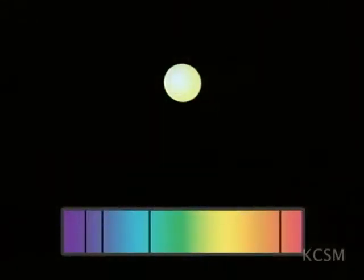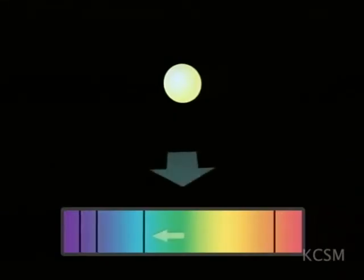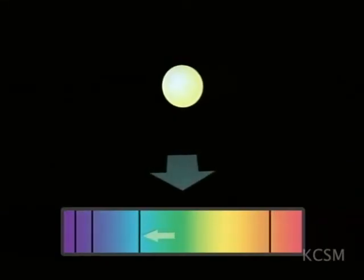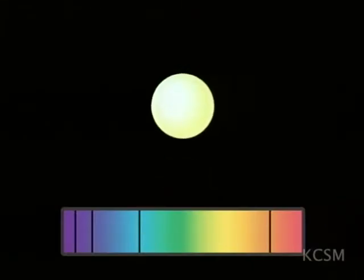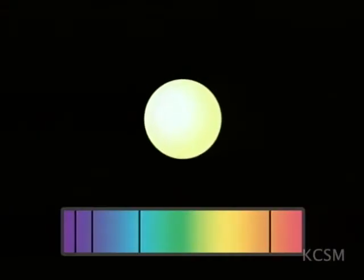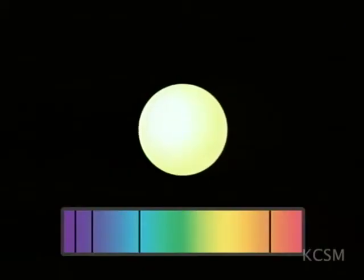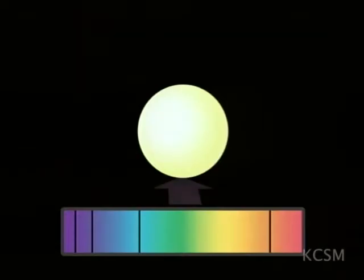The same principle can be applied to light. If you have something coming toward you, the spectrum gets shifted toward shorter wavelengths — and those shorter wavelengths are mainly blue wavelengths, so it gets shifted toward the blue. If something is going away from you, it's going to get shifted toward longer wavelengths, and that's mostly toward the red.